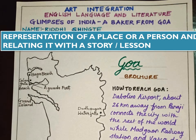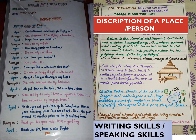Representation of a place, a person — we can relate it with a story or a lesson. There are different places in our history books, literature books, and social studies. These places can be represented with colors and interrelated as part of subject integration. We can also ask students to make up a story based on lessons we have taught. The description of a place can be taken as a speaking task or a writing task, and can also be incorporated into ASL — Assessment of Speaking and Listening — as an art-integrated project.